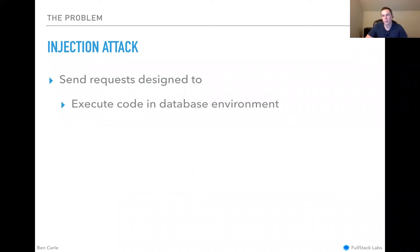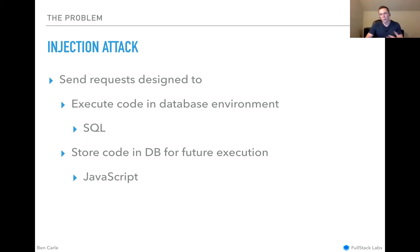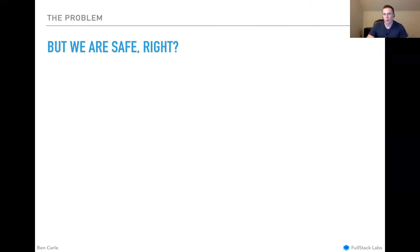They were also sending requests trying to execute in the database environment — this is probably what most people hear about: SQL injection attacks. SQL fragments, strings that terminate SQL statements and then begin new malicious ones. And lastly, they were sending code designed to be stored in the database and executed in the future when returned — for example, JavaScript that might run in the browser. So this is an overview; we saw all kinds and just a flood of these different attack types.